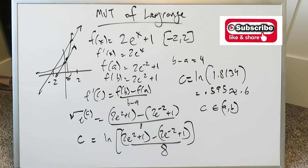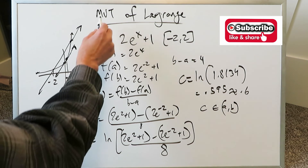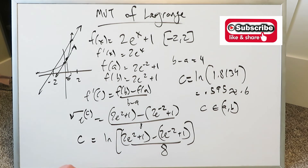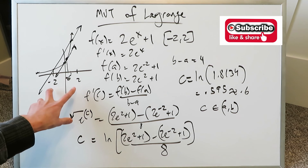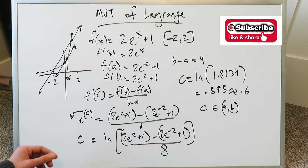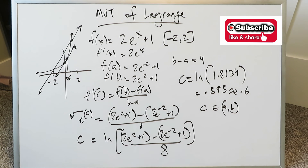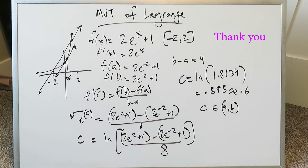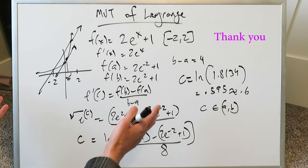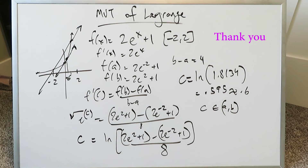This question has been completed. Keep in mind the mean value theorem — we're examining a specific property where you have a point between an interval, and the slope of the tangent at that point is equal to the slope of the secant over that interval. Thank you. Have a nice day.